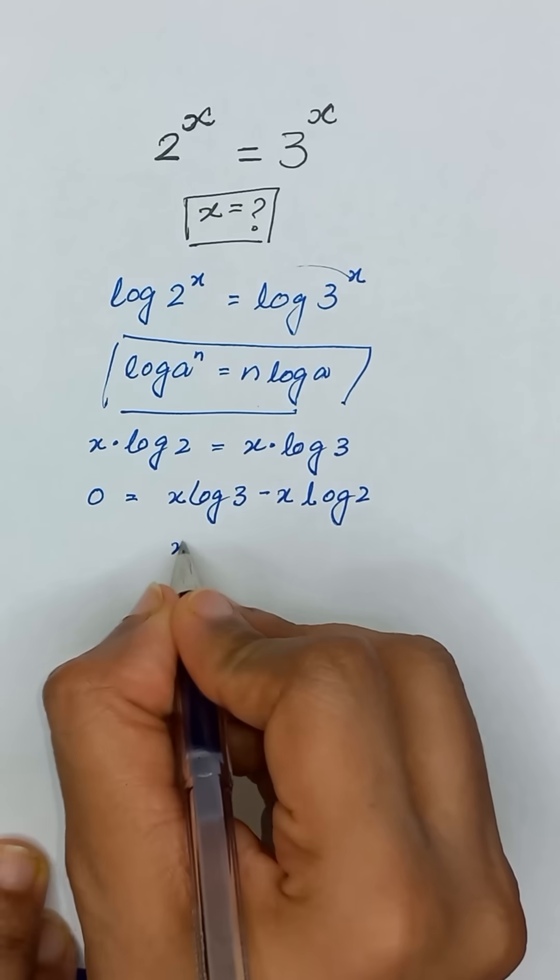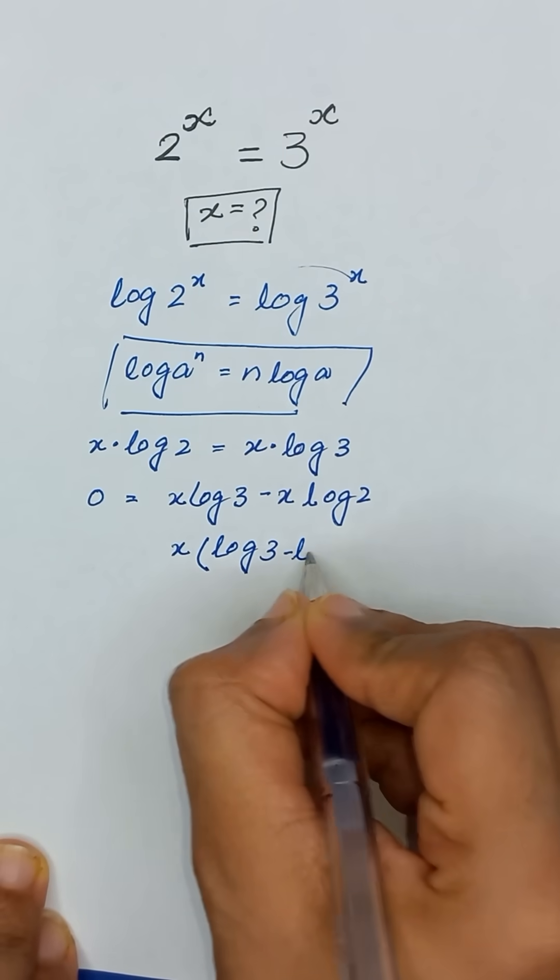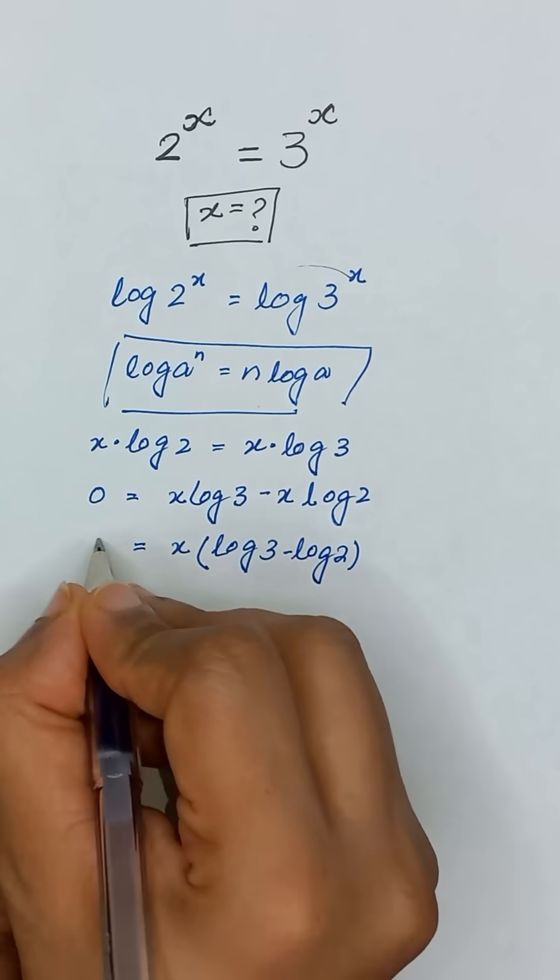From these two terms we have x is common. So it will become x times log of 3 minus log of 2 is equal to 0.